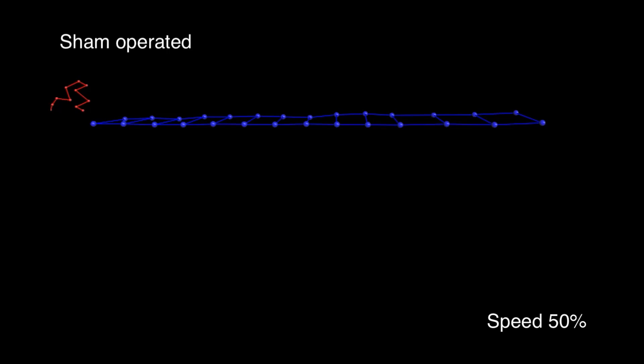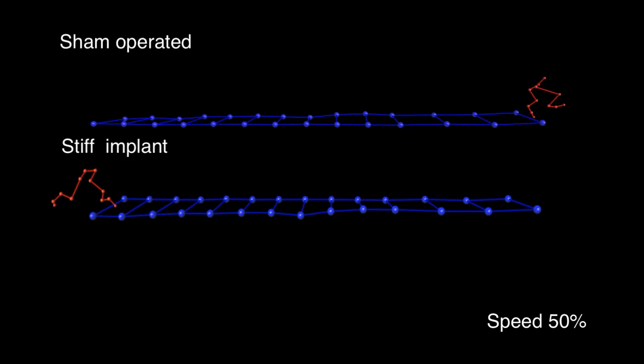Sham operated rats, which only received the head stage, connector, and vertebral orthosis, did not show deficits when traversing a horizontal ladder. The rat with the stiff polyamide implant displayed significant motor deficits, which deteriorated over time.